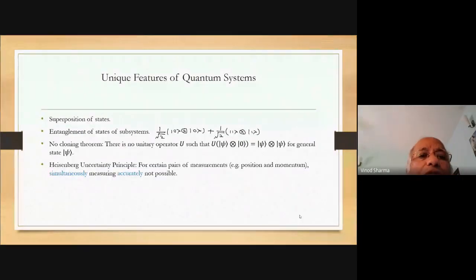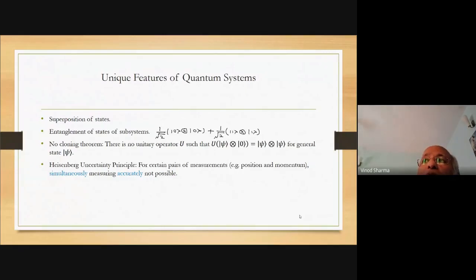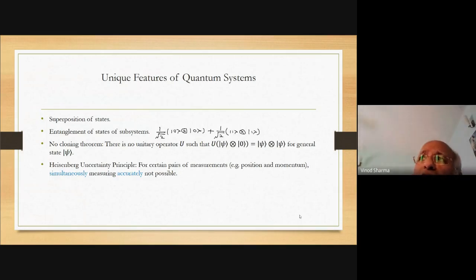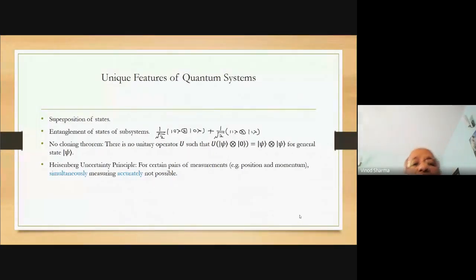The consequences of these differences yield unique features of quantum systems. A state of a qubit can be in a superposition of states: |φ⟩ = a|0⟩ + b|1⟩ is a superposition of states |0⟩ and |1⟩. In the classical world you can have a bit in state zero or one, and on top of that you can have a probabilistic representation - say with probability 0.3 in state zero and 0.7 in state one - but the quantum superposition is much more general than this.